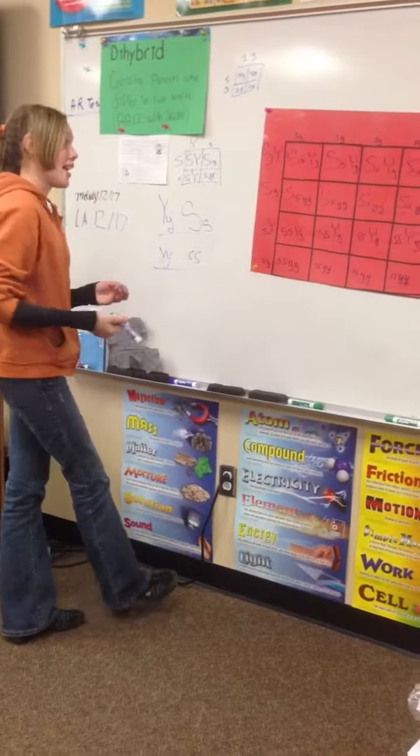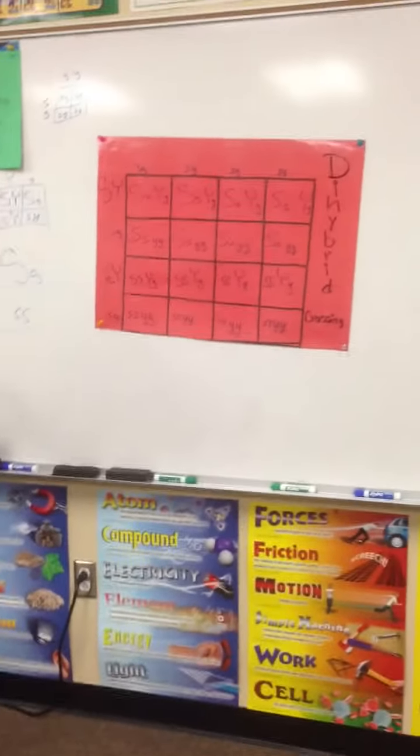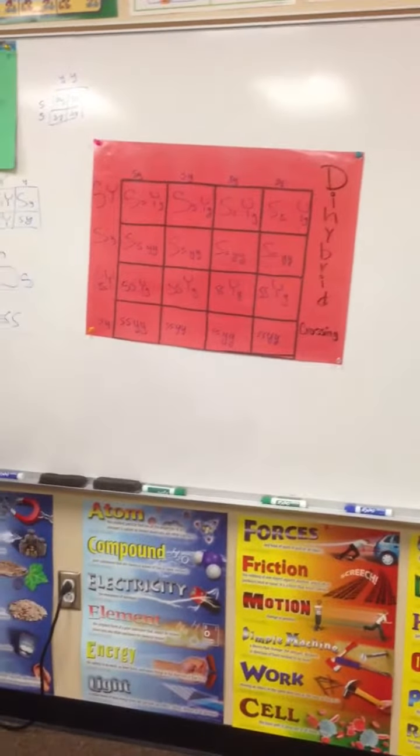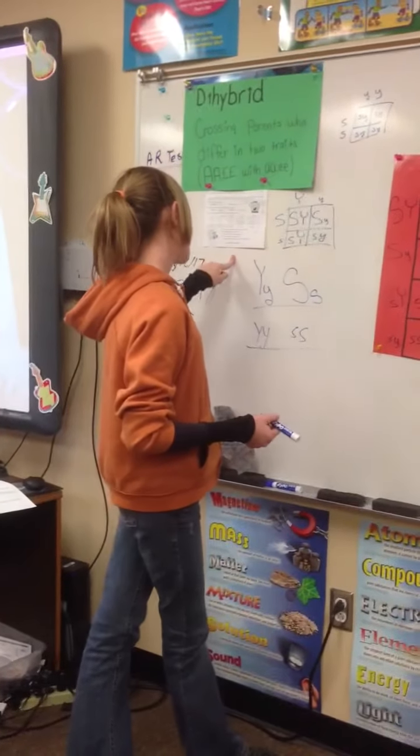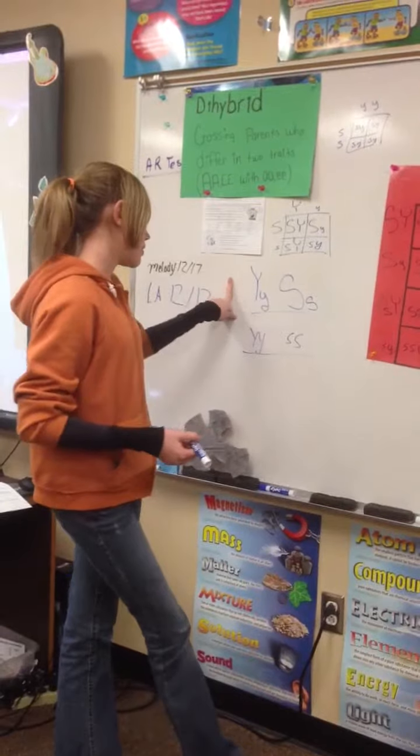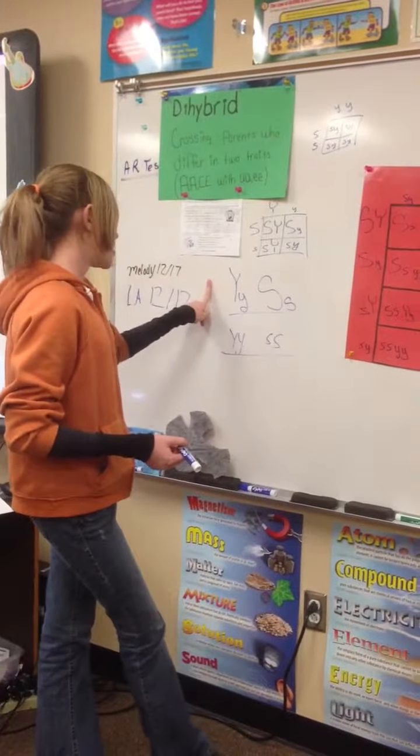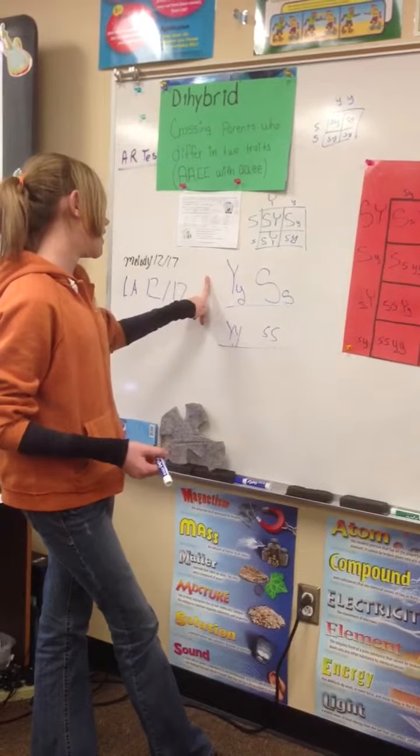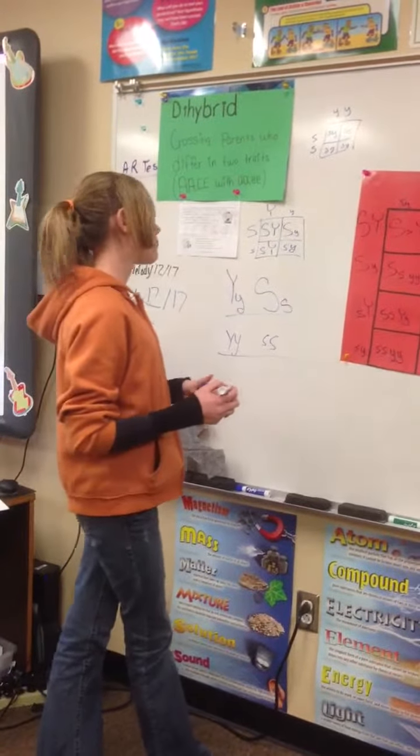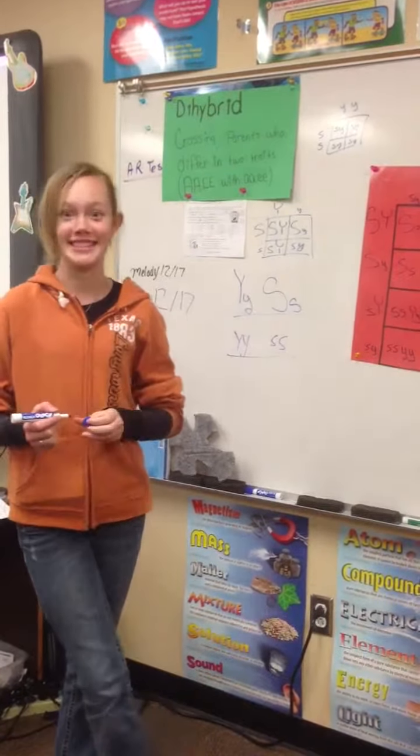This is our dihybrid Punnett square. The chance of them having a blue baby is 50%. The chance of them being blue with square pants is one-fourth, which is 25%. And the chance of square pants is 50%. And the chance of purebred recessive for both traits is one out of four, or 25%.